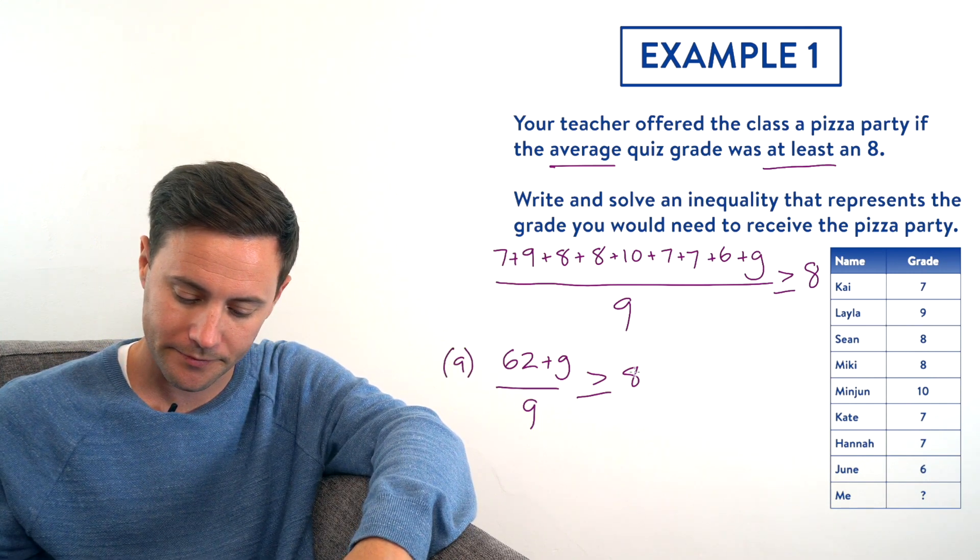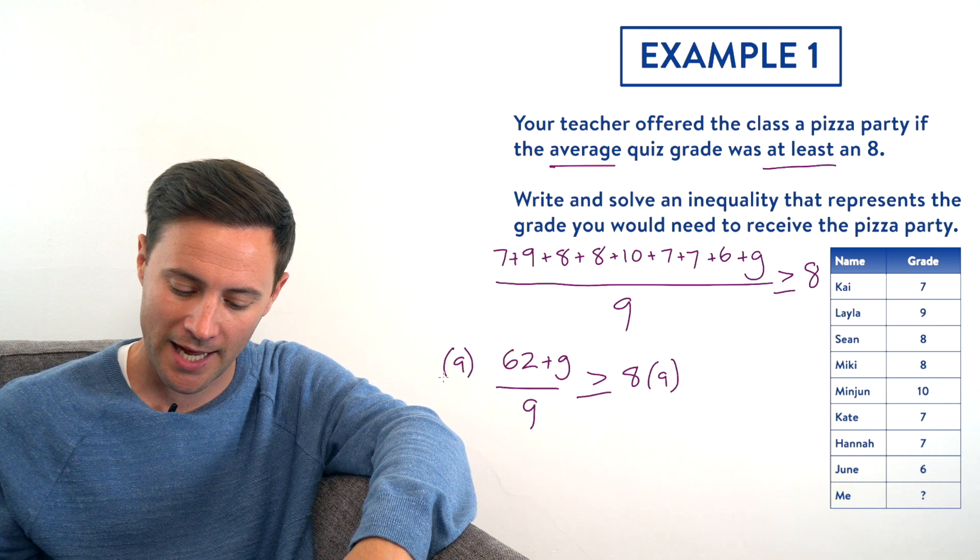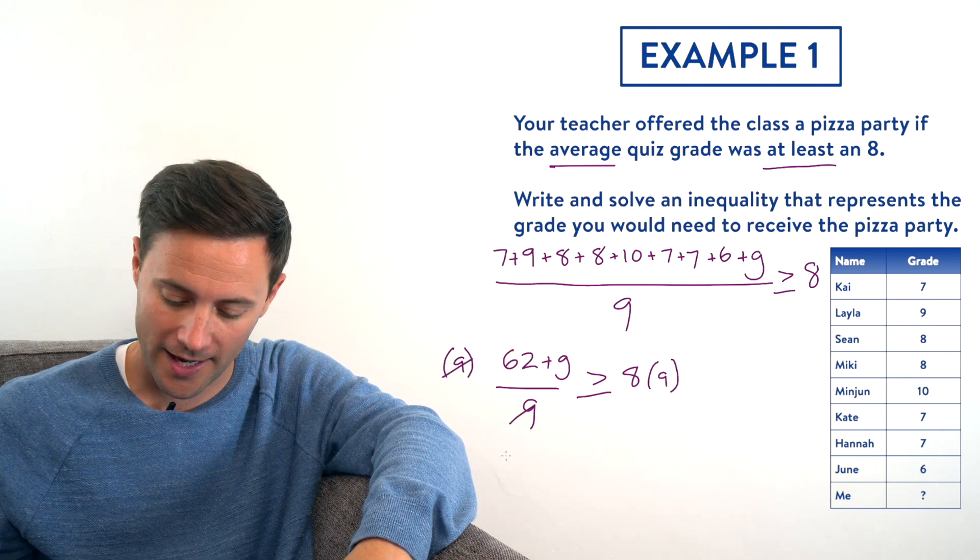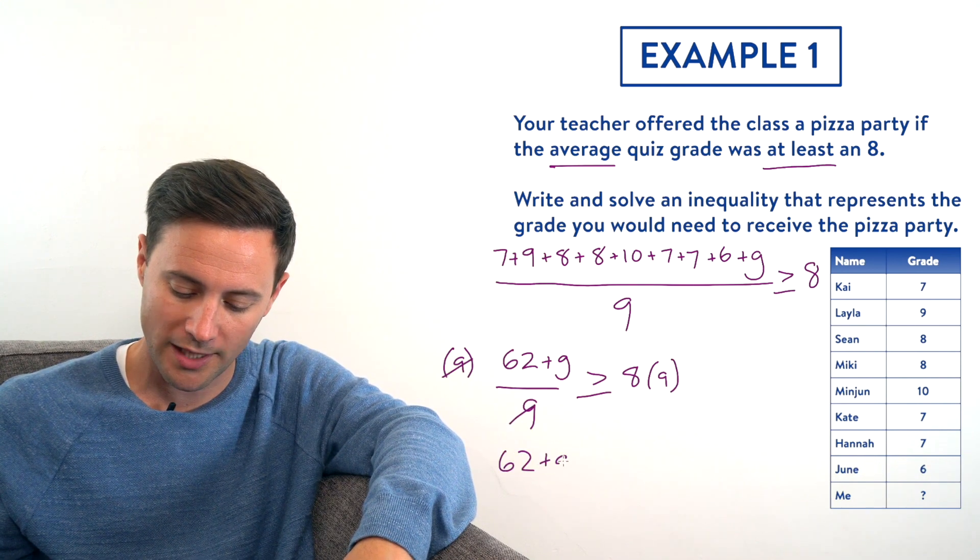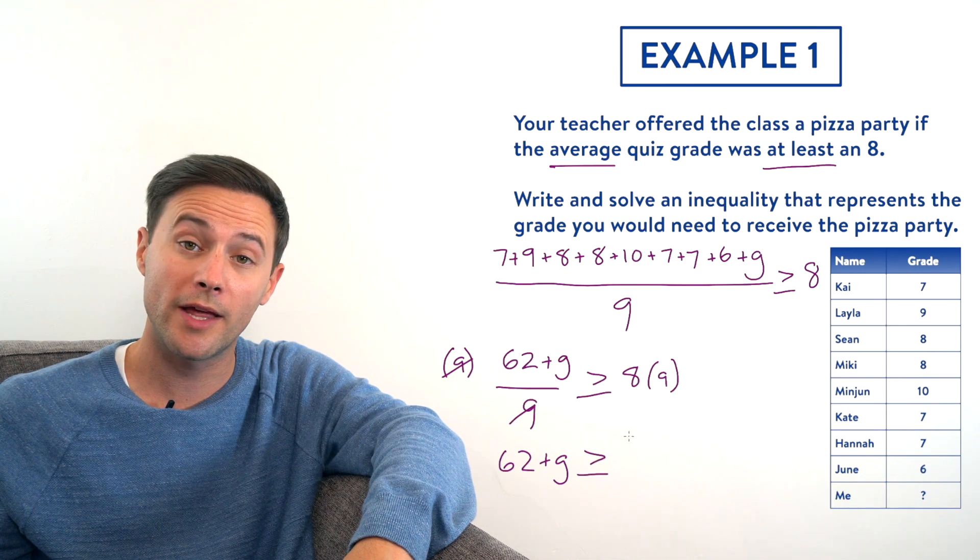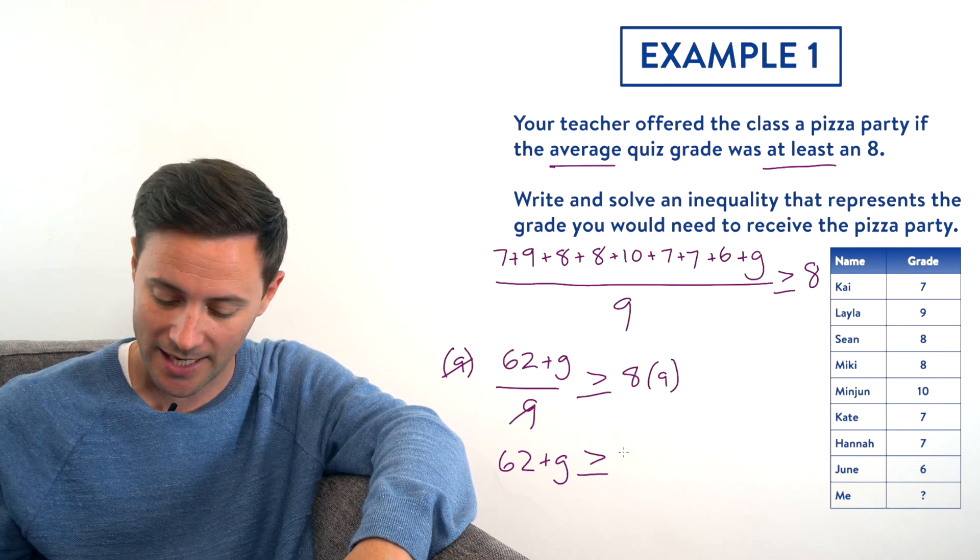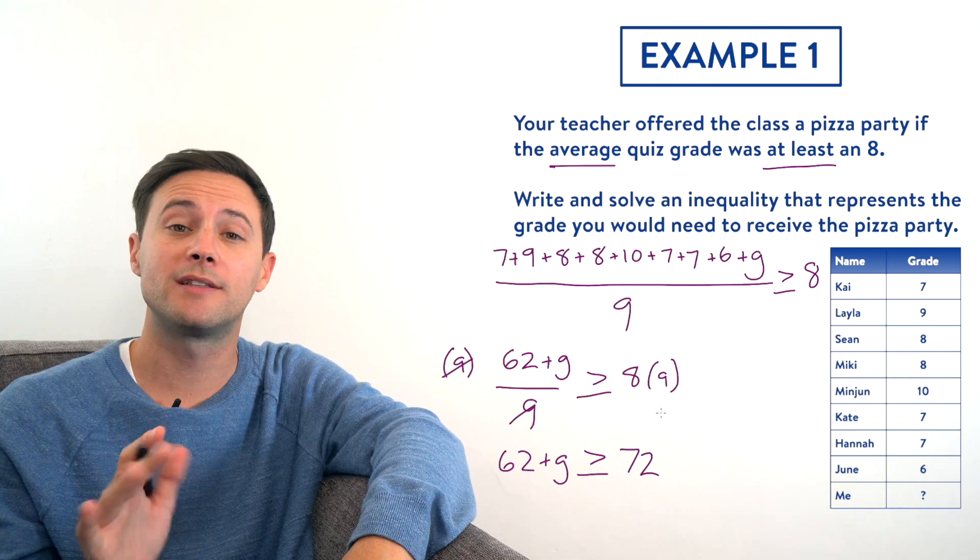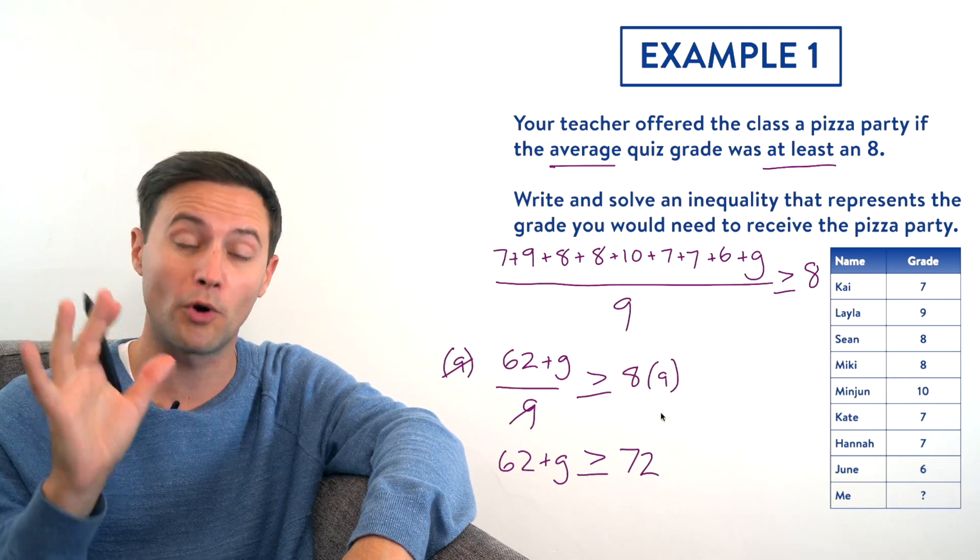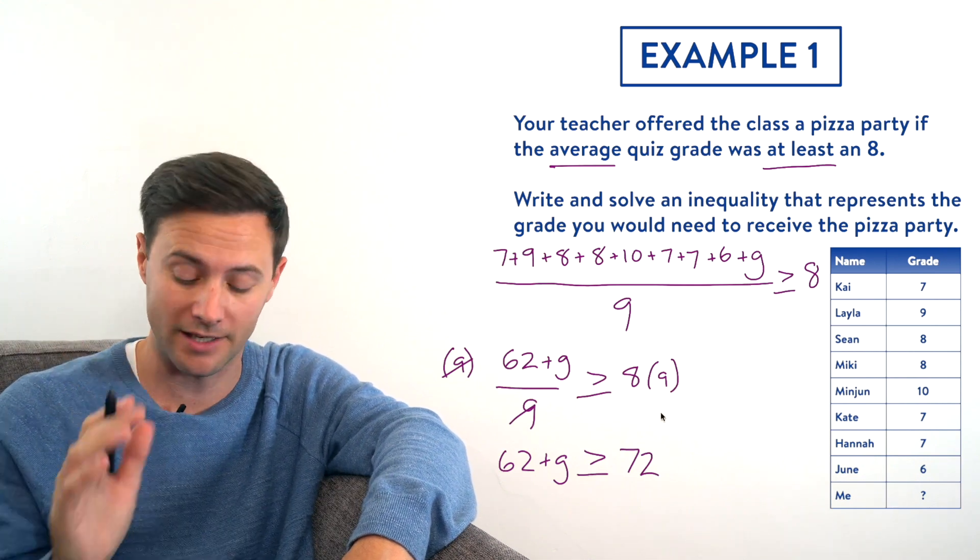Let's multiply both sides by 9. Those 9s simplify, and we're left with 62 plus G is greater than or equal to 8 times 9, which is 72. I don't need to switch the inequality symbol because we multiplied both sides by a positive 9.